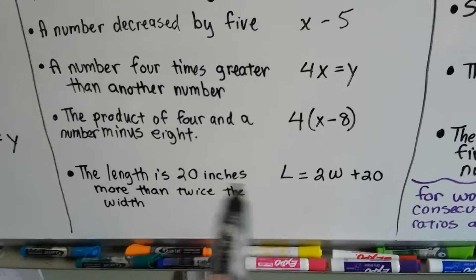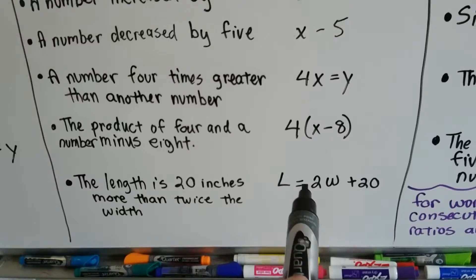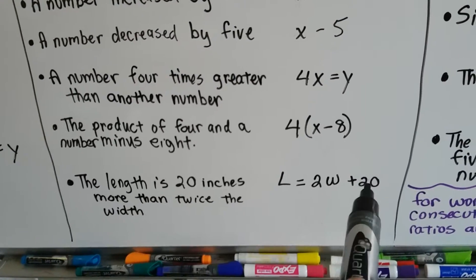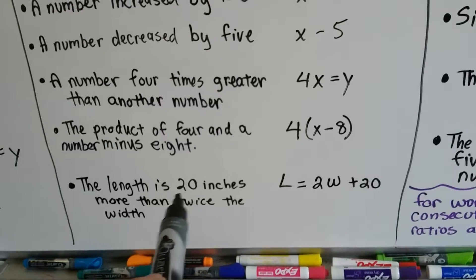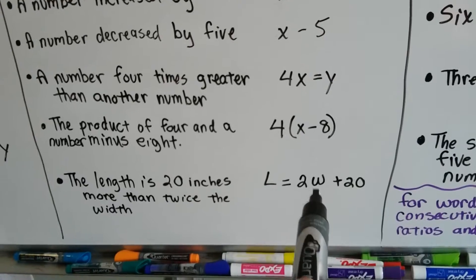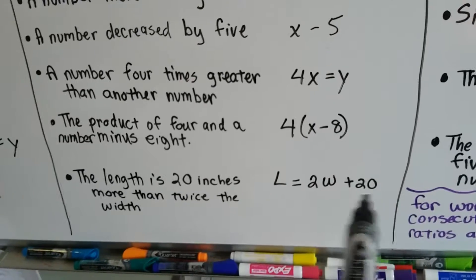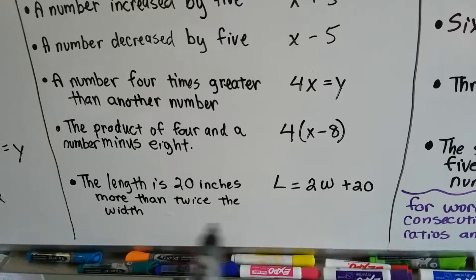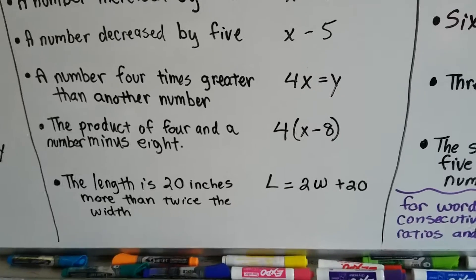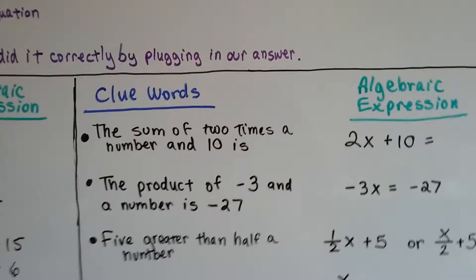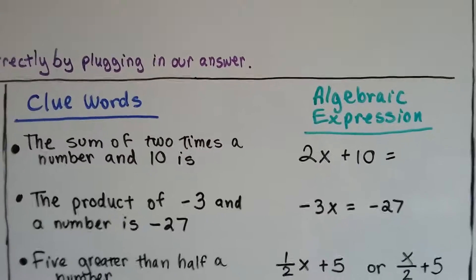The length l equals 20 inches more plus 20 than twice the width, than 2 times the width. So l is equal to 2w plus 20. Instead of using x and y, I used l and w to represent length and width, because those variables made more sense.